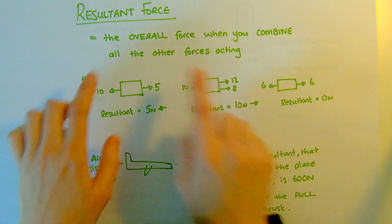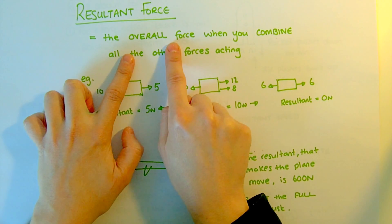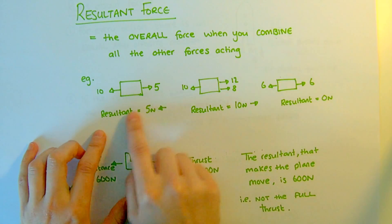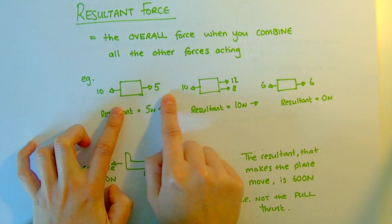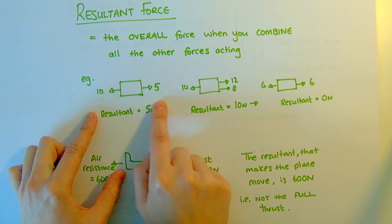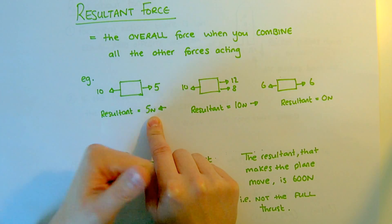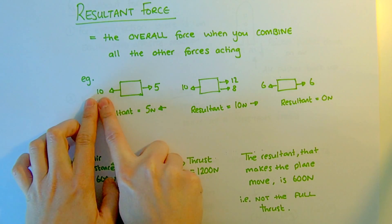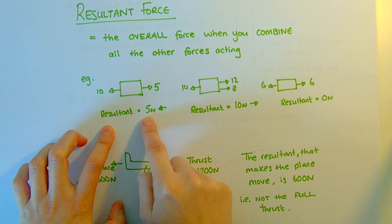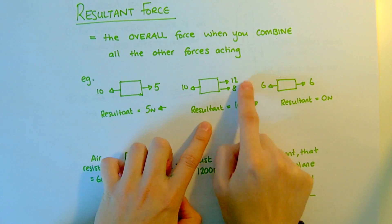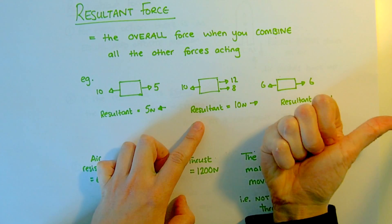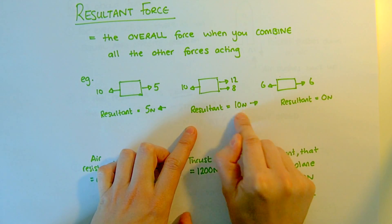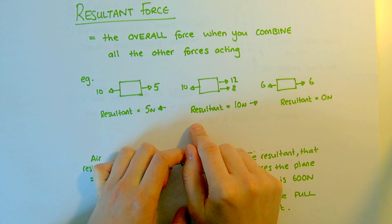Resultant force is the one overall force that is the same as when you combine all the other forces acting. For example, this box has 5 newtons to the right and 10 newtons to the left — overall, that's just the same as 5 newtons to the left. In another case, 12 and 8 add together because they're in the same direction, then we take away 10 pulling the other way, which leaves us with 10 overall to the right.